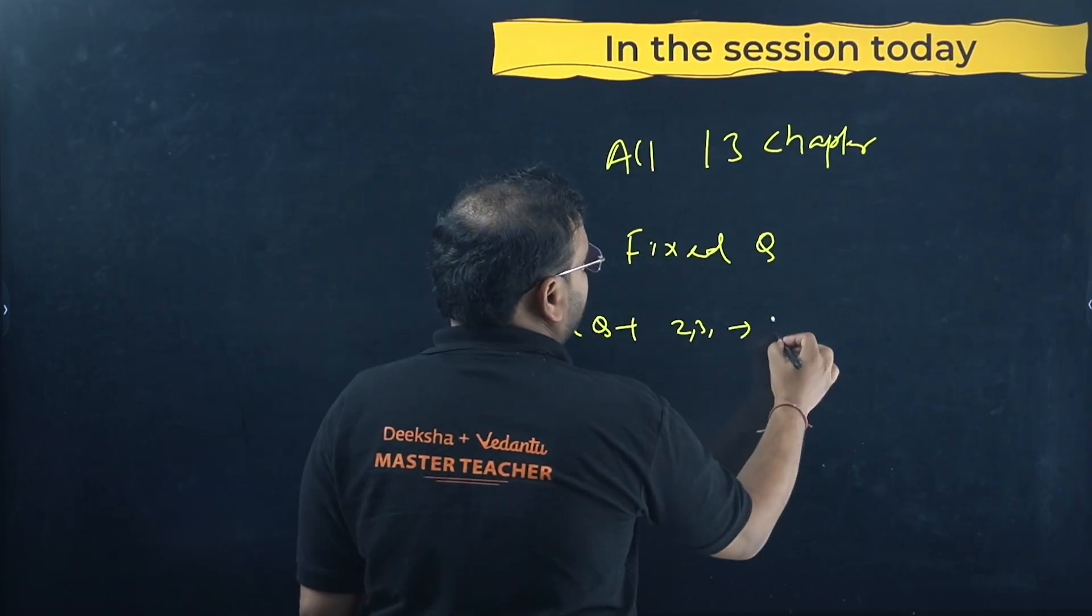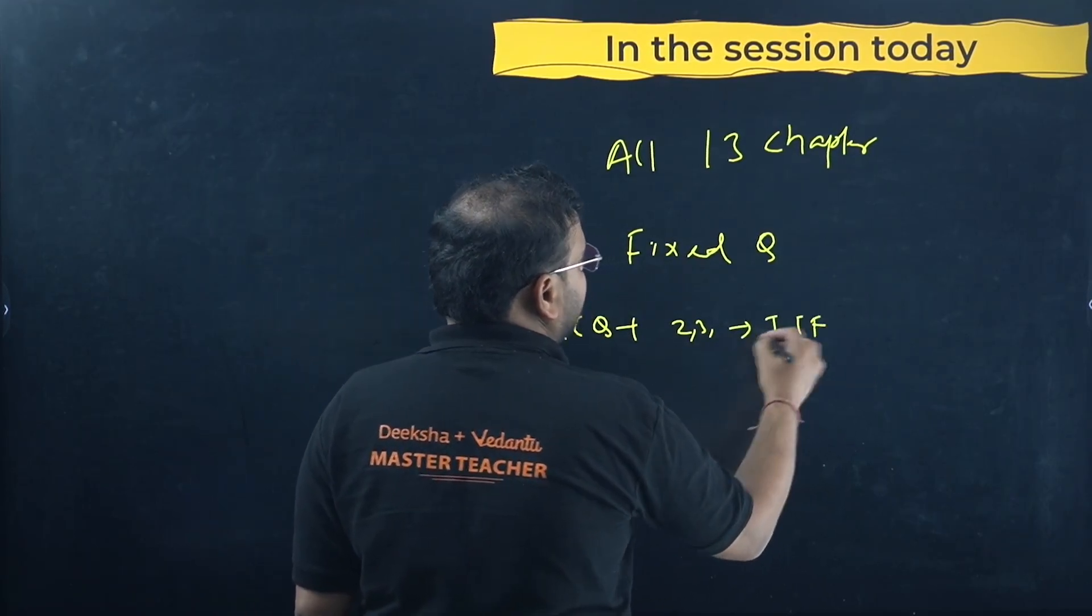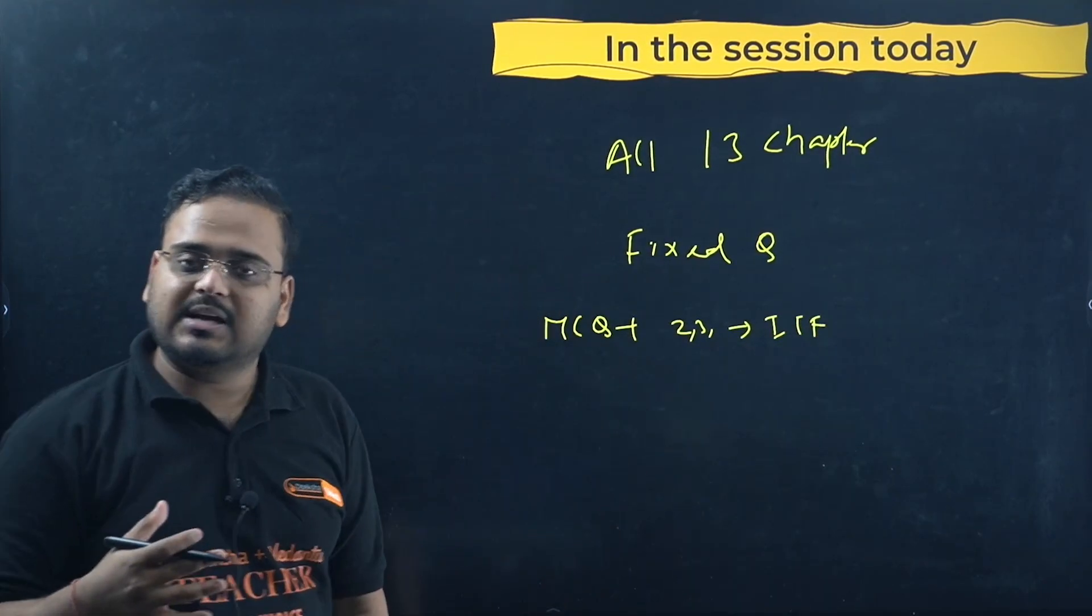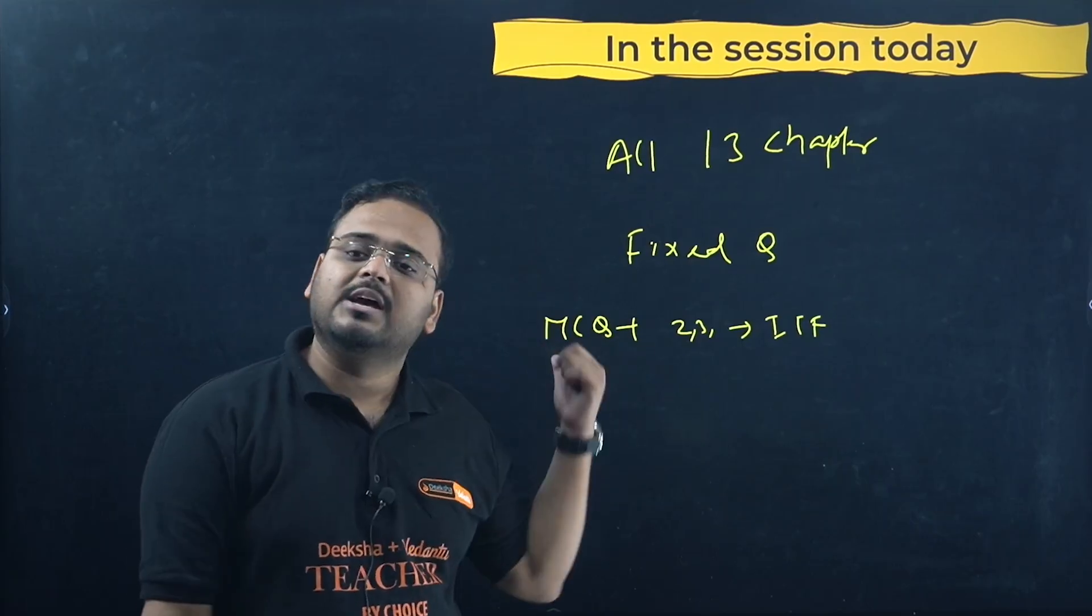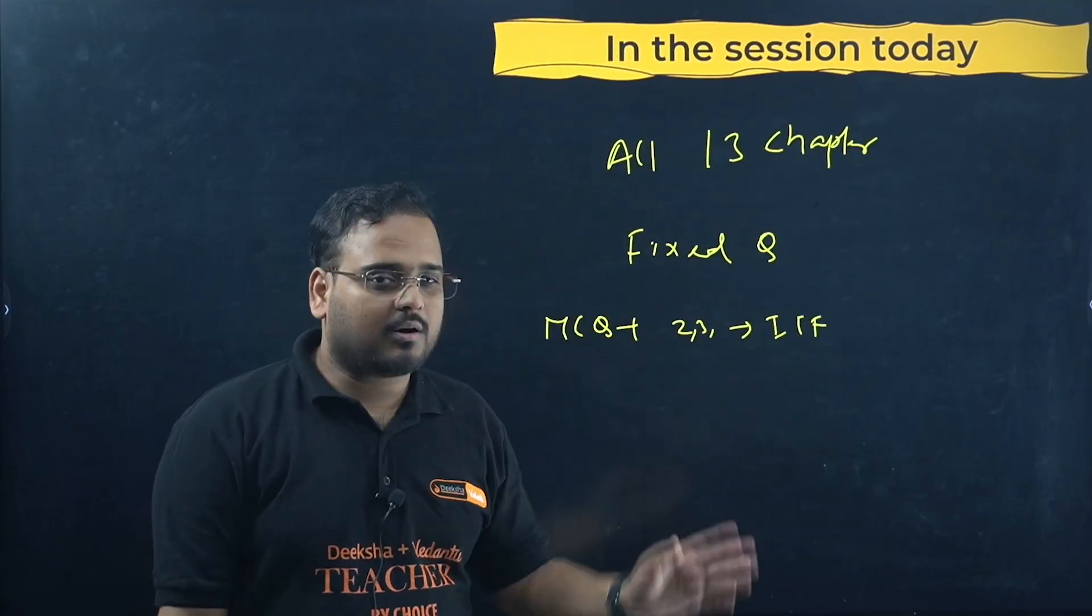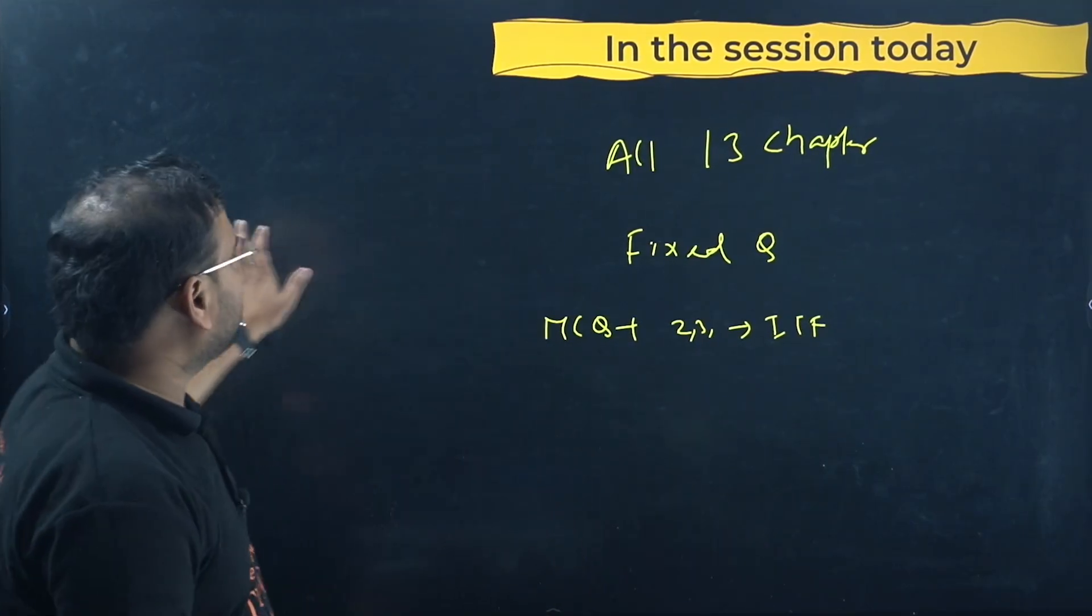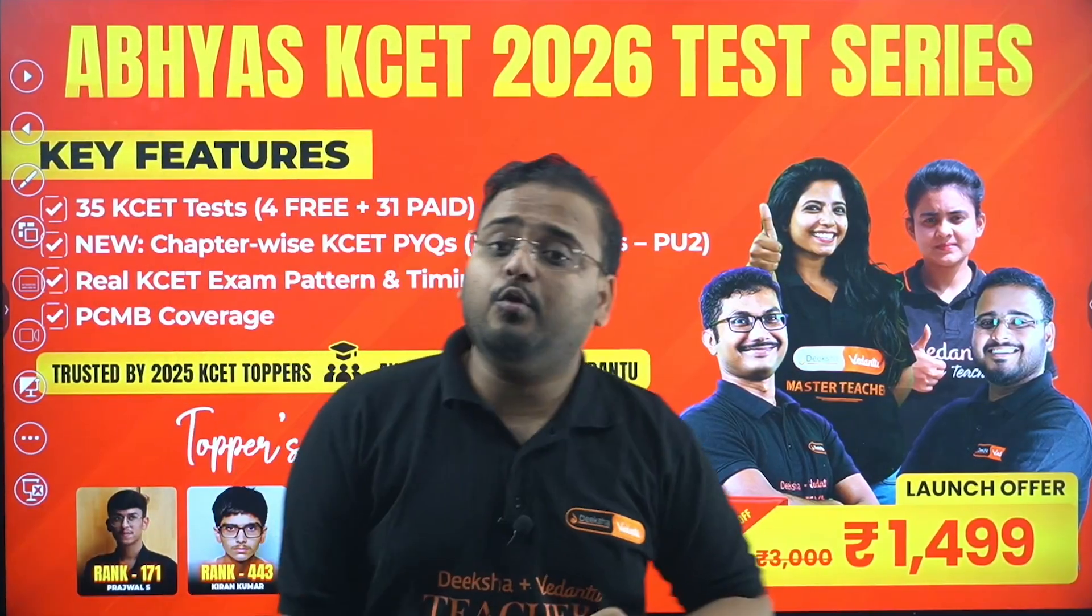In ITF there's no five marker, only two and three markers. For example, this is for ITF, then you move ahead with integration. Based upon the chapters and the weightage of the chapter, I have given you list of questions: MCQs plus your two, three, five marker, four marker, six marker, whatever it is. Let's check this out right now.